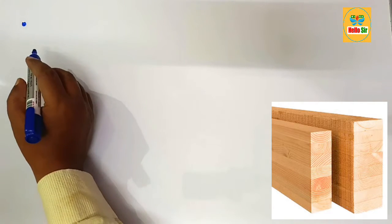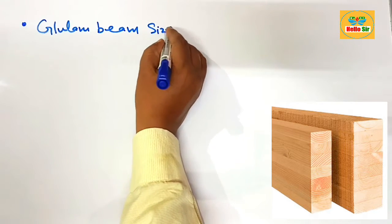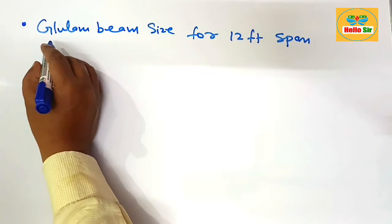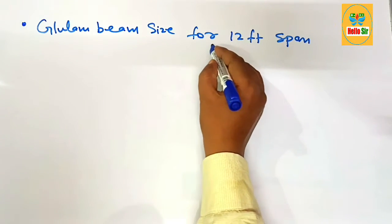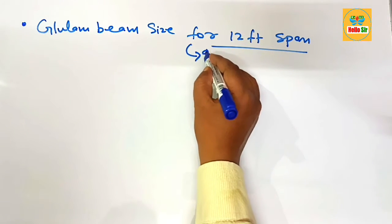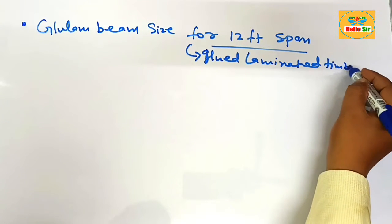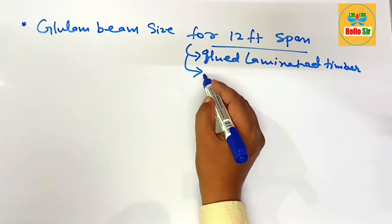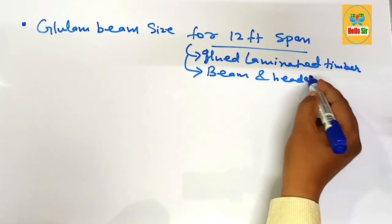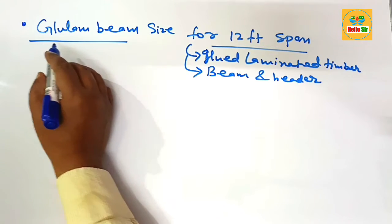Today in this video we will learn about glulam beam size for a 12-foot span — what size glulam beam is required. First, you should understand what a glulam beam is. It is glue laminated timber, made by sandwiching multiple layers of thin sheets of wood. It is used as a beam and header in building construction.